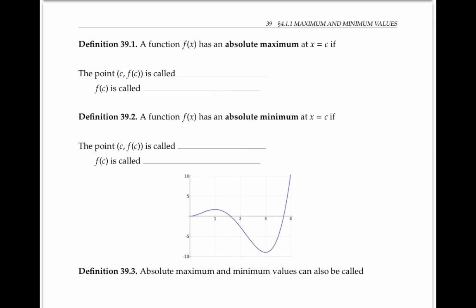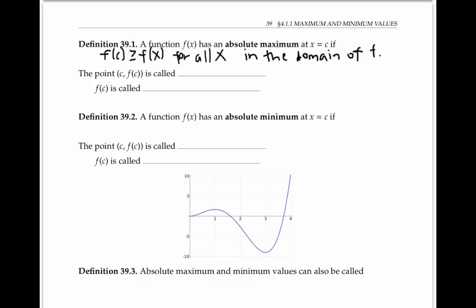A function f of x has an absolute maximum at the x value of c, if f of c is greater than or equal to f of x for all x in the domain of f. The point with coordinates (c, f(c)) is called an absolute maximum point, and the y value f of c is called the absolute maximum value.